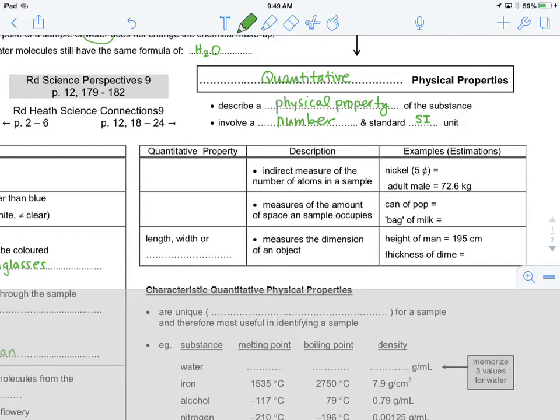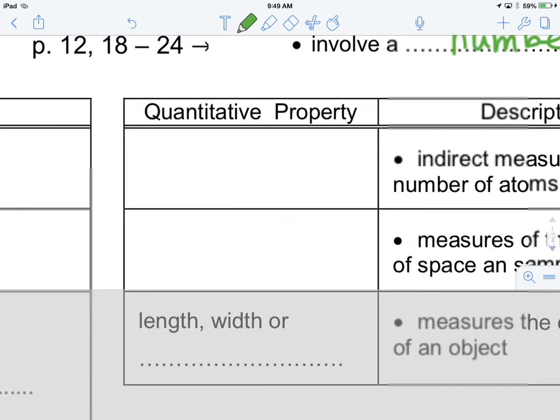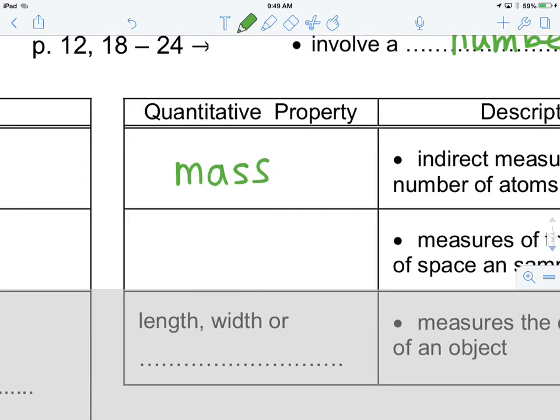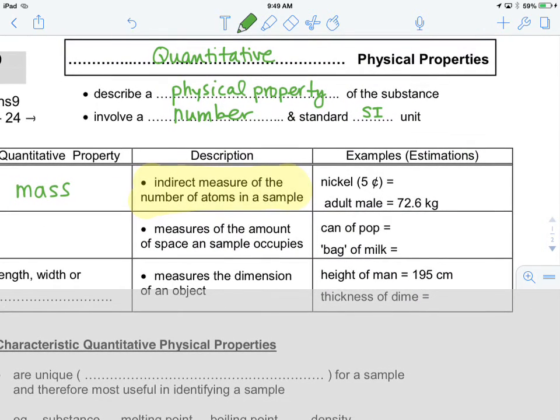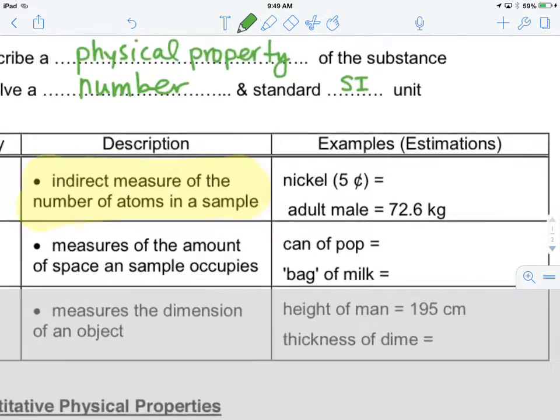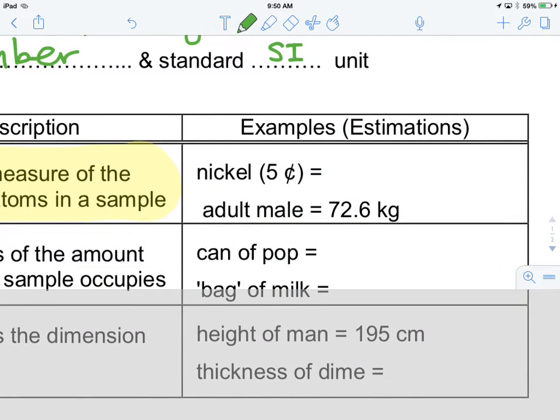You'll be very familiar with SI units once we talk a little bit more about them. Here are three quantitative physical properties. The first is mass. This is an important definition for you to remember, so I'm going to highlight this. Mass is an indirect measure of the number of atoms that are in a sample. And this is an important description to remember. A nickel, if we were to estimate how much mass this would have, we'd say, well, maybe about five grams. And similarly, an adult male, we would say, well, about maybe 72.6 kilograms. This would be a very specific estimation.